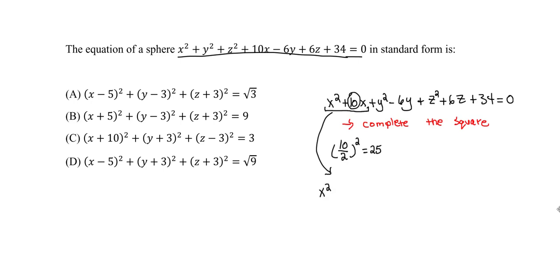So we get 25. We keep x squared plus 10x, then add 25. If we add 25 to this side, we must add 25 to the other side as well. That step is done.